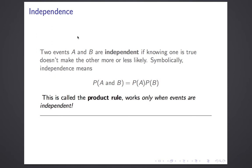The most important thing to remember about the product rule is that it works only when A and B are independent. You can think of it as analogous to the simple sum rule. The simple sum rule said that probability turns OR into PLUS if the events are disjoint. The product rule says probability turns AND into TIMES if the events are independent.